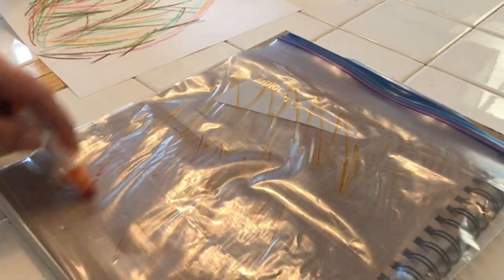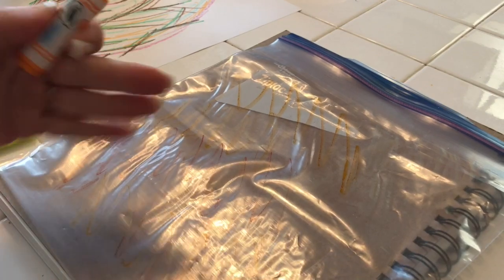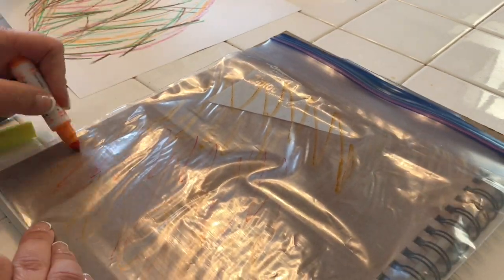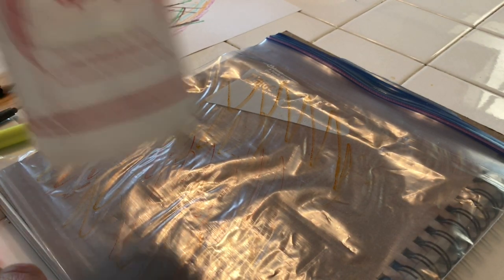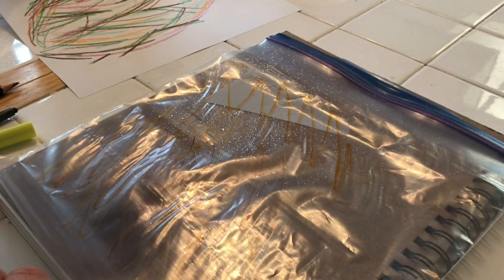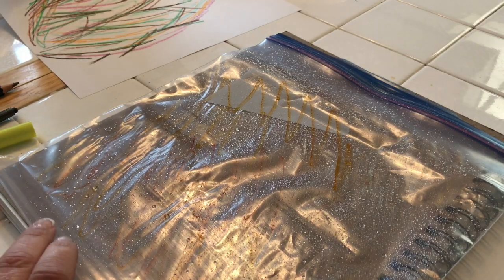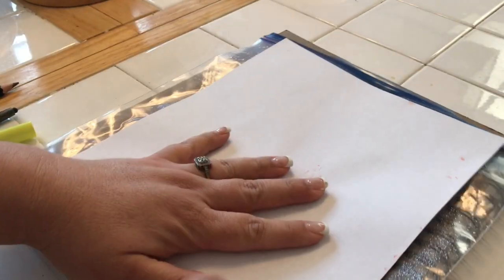And then you'll need a spray bottle with water, which is where we get the watercolor effect. Do be careful that it will transfer to your hands if you do touch it. Spray it down with a little water. Take your paper art side down and then just pat it on there. Let's see what happens.